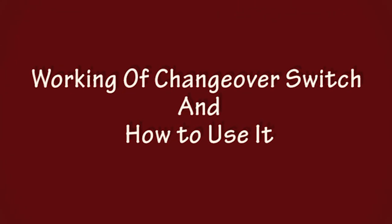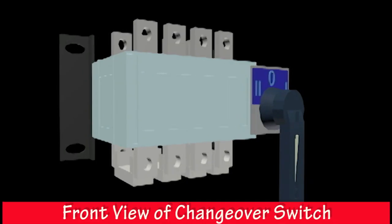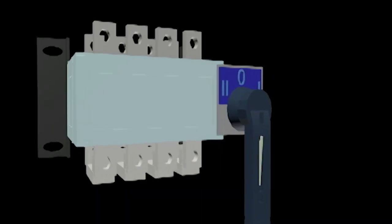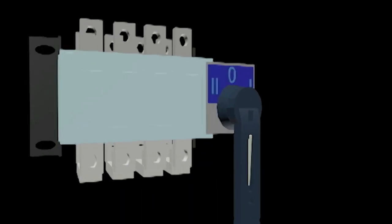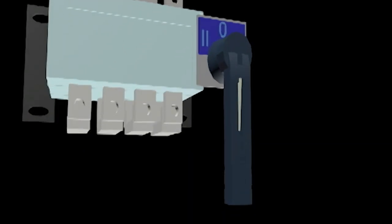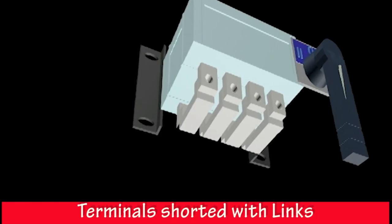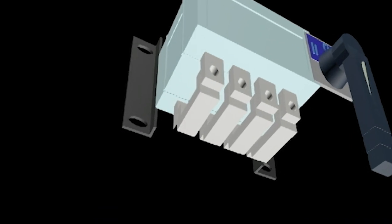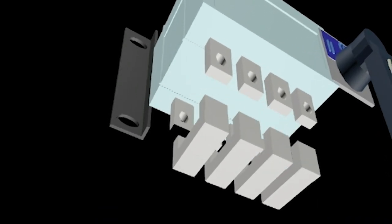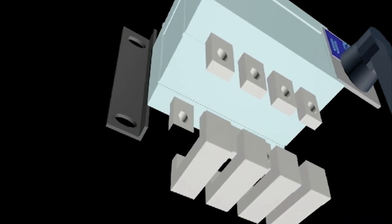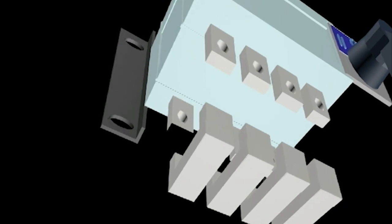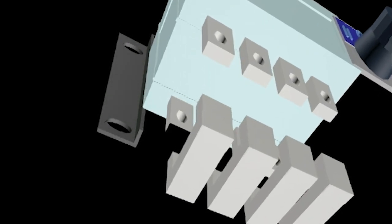In this video we will see the working of a changeover switch and how to use it. In the front view we have a handle which can rotate to position 1, 2, and 0. At the lower side we can see tunnels which are shorted by shorting links. This is a four-pole changeover switch, and these links are detachable.